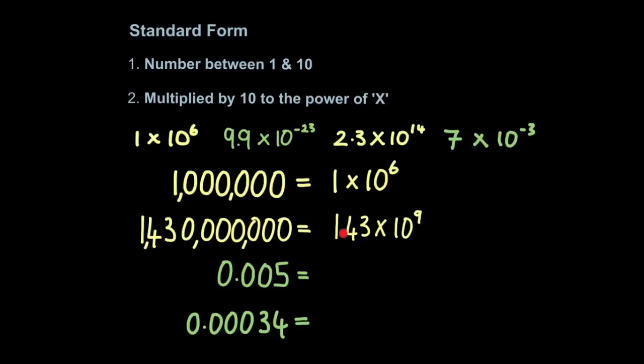You're counting the number of positions after the decimal point. So 1, 2, 3, 4, 5, 6, 7, 8, 9.